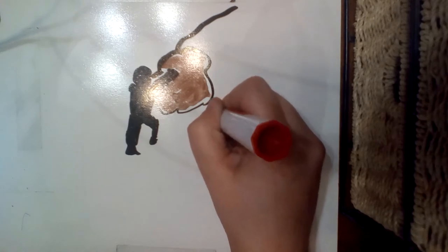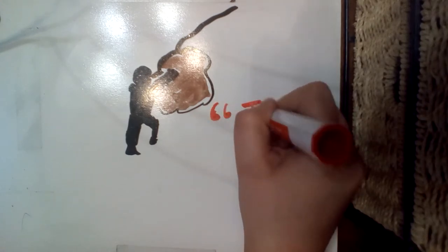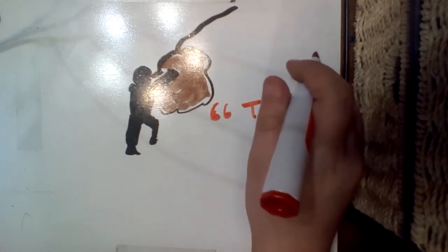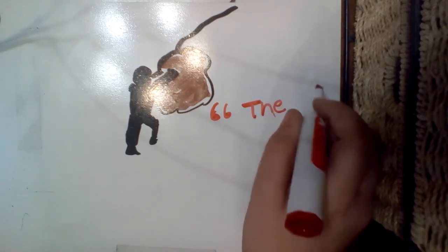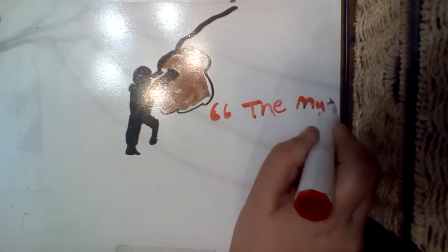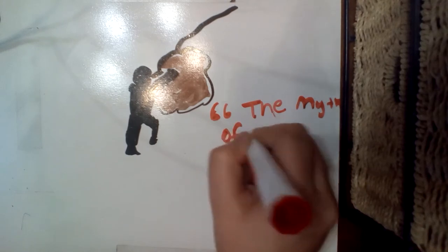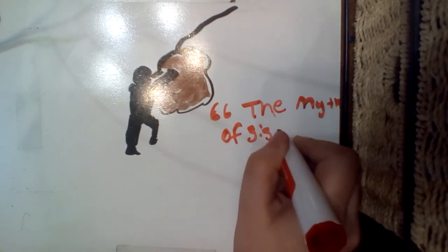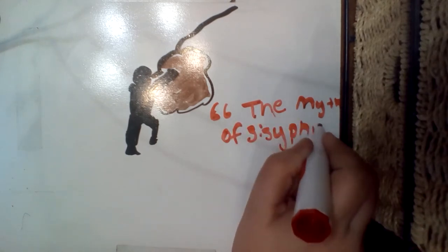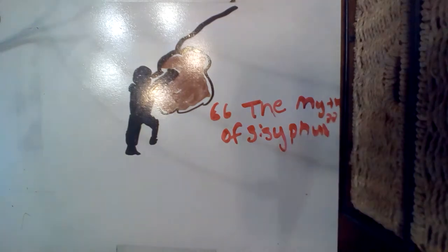However, Meursault's indifferent approach to the world was at odds with Camus' philosophies. He rejected existentialism for the very fact that existentialism rejects all moral restraints in favor of defining one's own meaning. In this sense, Camus was more a humanist than anything else, though he struggled for most of his life to reconcile his views of the absurd with his belief in the need for human morality.